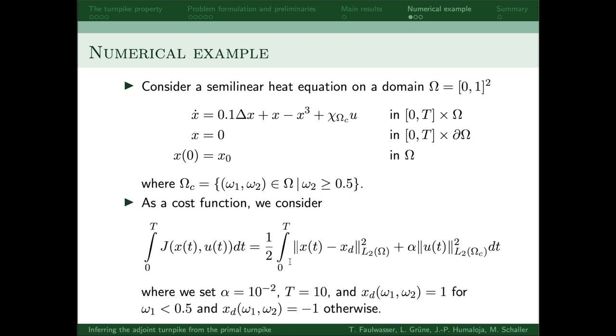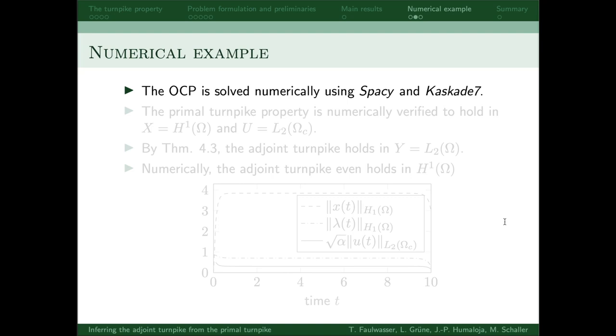The cost function is just a quadratic function of the state and control, where the target state has been set to 1 on the left-hand side and minus 1 on the right-hand side of the square. The other parameters are shown here as well.